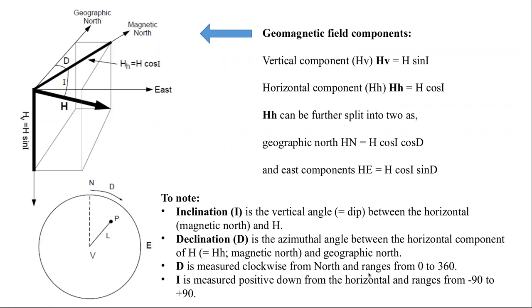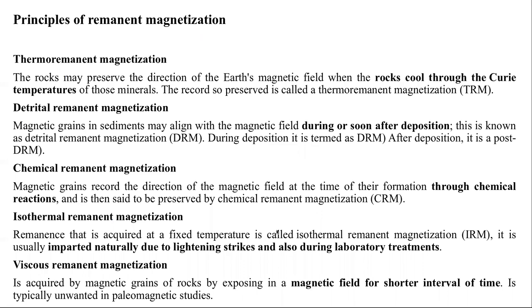As shown in the figure here, declination is measured clockwise from north and ranges from 0 to 360 degrees. In this stereonet, the 0 to 360 degree range is how we calculate declination, and declination is always a positive value. Inclination is measured positive downward from horizontal and ranges from minus 90 to plus 90 degrees.